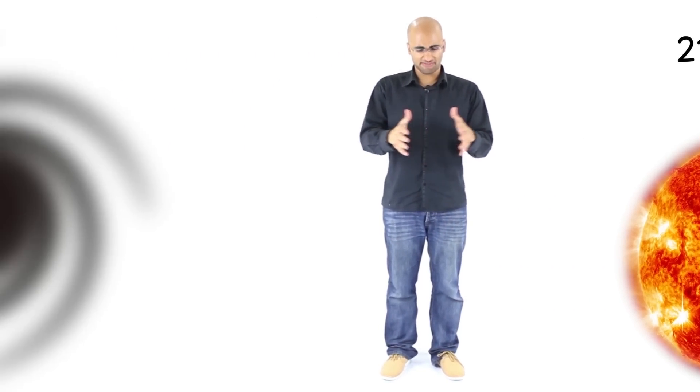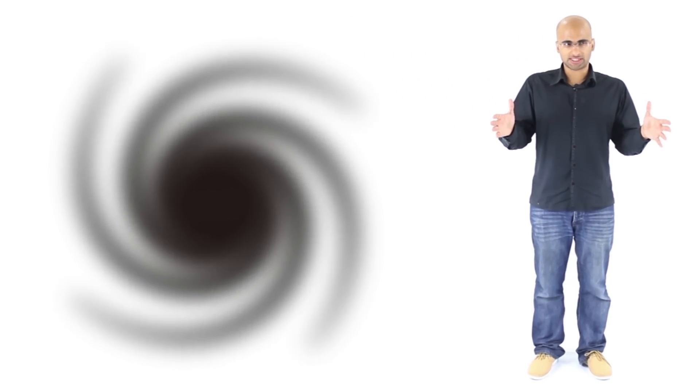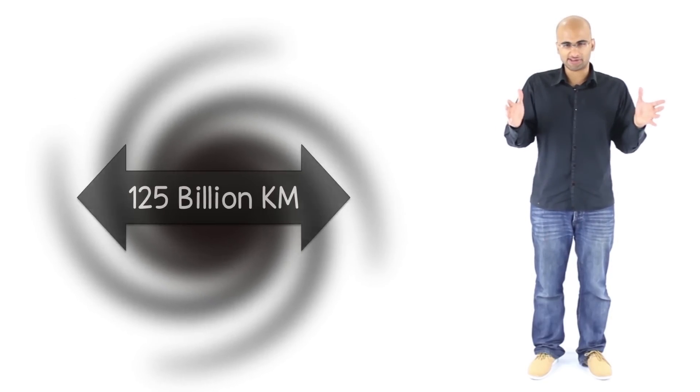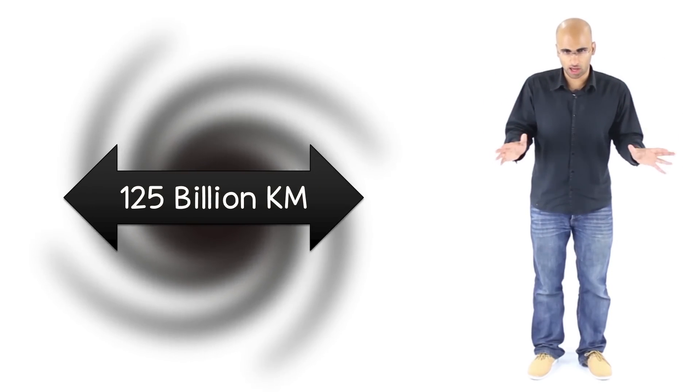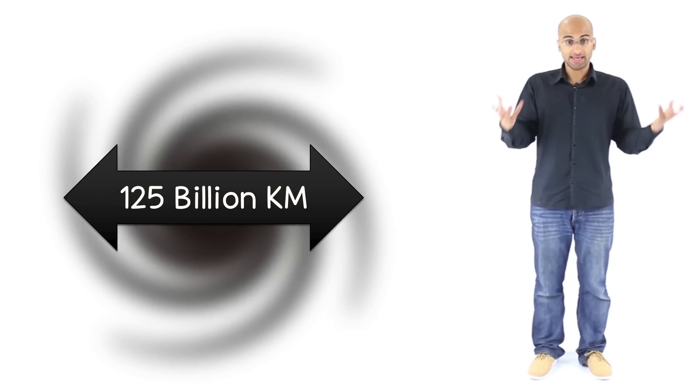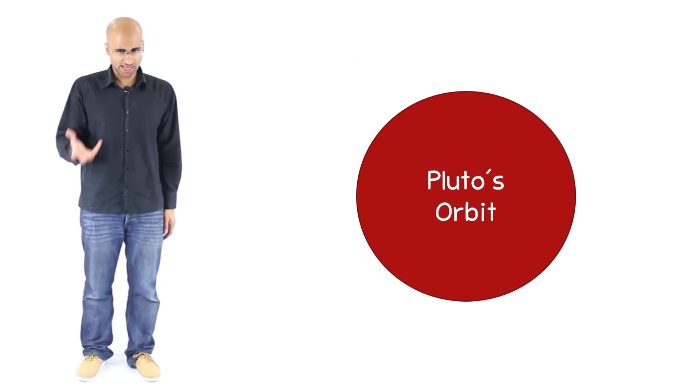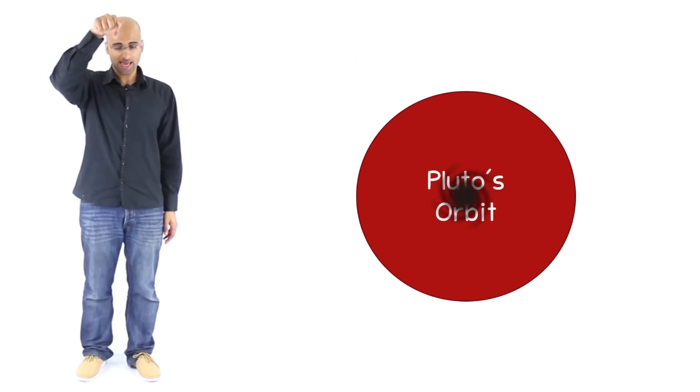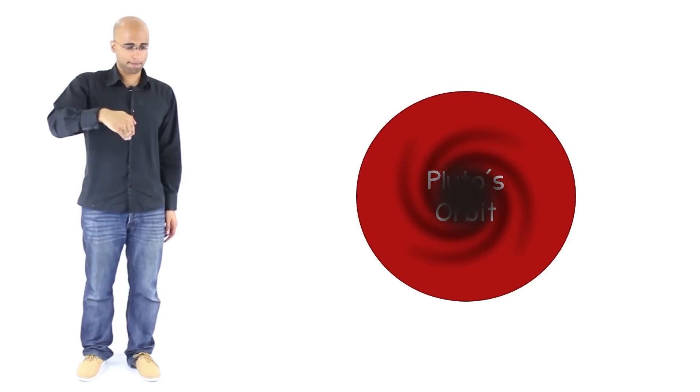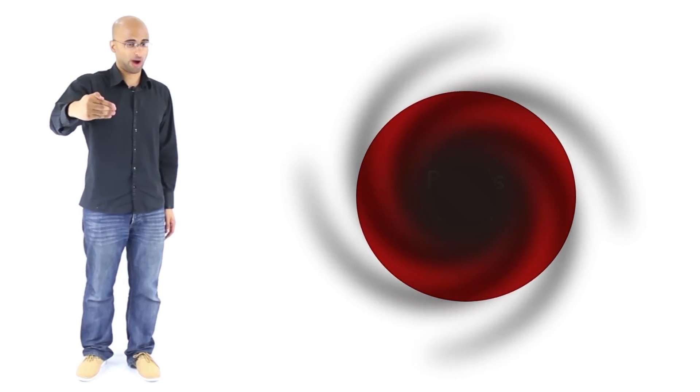This means that this thing's event horizon is going to be something like 125 billion kilometers in diameter. It is absolutely ginormous. If this thing was in the center of our solar system, it would extend beyond the orbit of Pluto and then nine times farther than that. But here is how it's not exactly that scary.